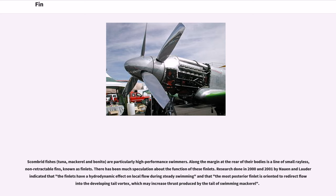Scombrid fishes — tuna, mackerel, and bonito — are particularly high-performance swimmers. Along the margin at the rear of their bodies is a line of small non-retractable fins known as finlets. Research done in 2000 and 2001 by Nauen and Lauder indicated that the finlets have a hydrodynamic effect on local flow during steady swimming, and that the most posterior finlet is oriented to redirect flow into the developing tail vortex, which may increase thrust produced by the tail of swimming mackerel.